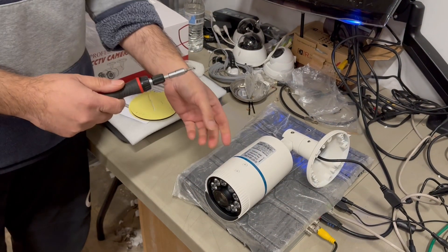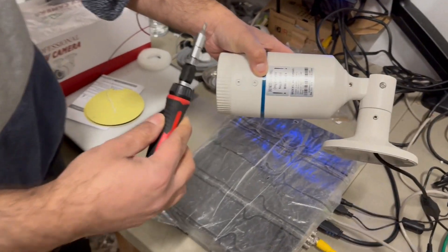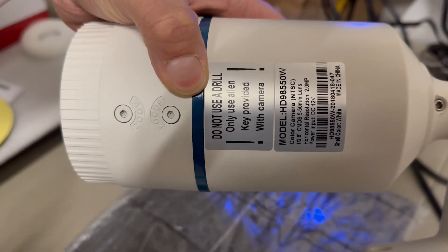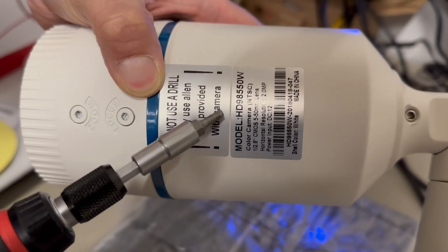I'm going to show you how to correctly set the focus and zoom on this varifocal manual zoom outdoor bullet camera with infrared night vision. It has a 5 to 50 millimeter lens which is massive. This is a model HD 98550.